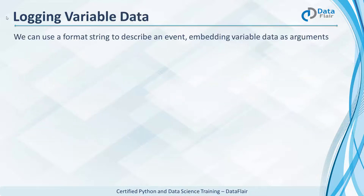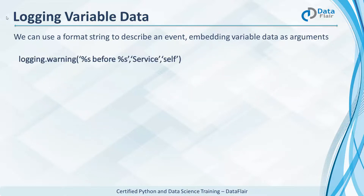But not only text — we can also log the values of variables. We can interpolate strings. Here we use the % operator to embed two strings in the message to log. And so it logs this using the values 'service' and 'self'.